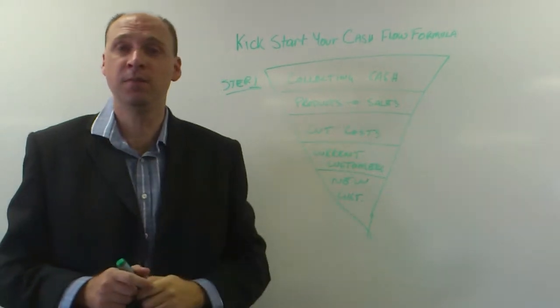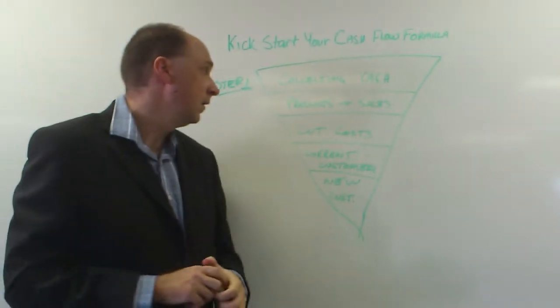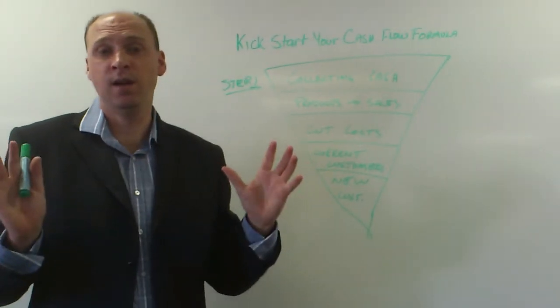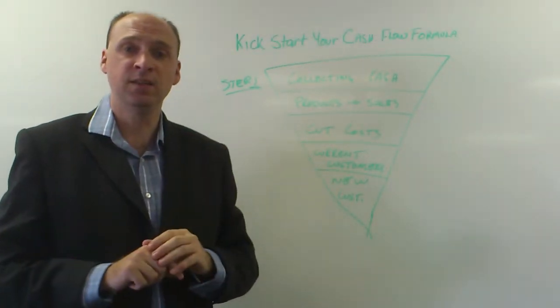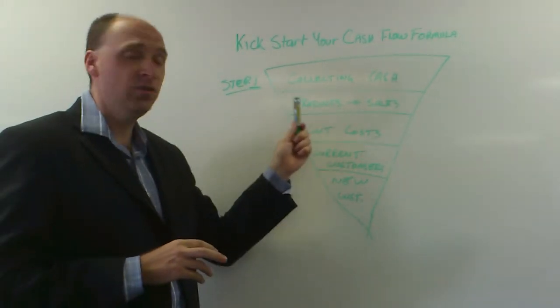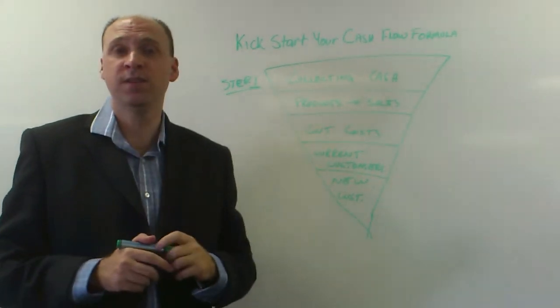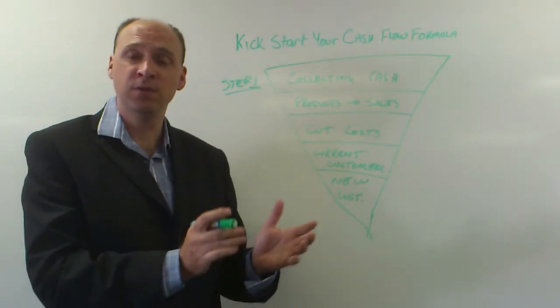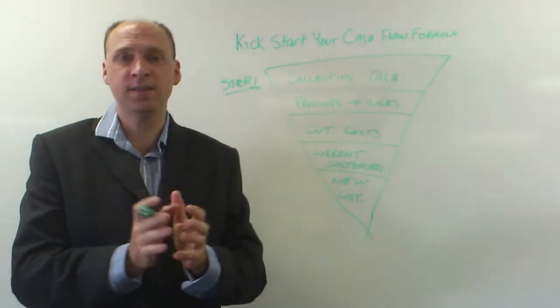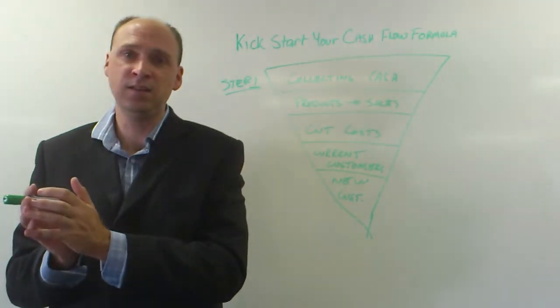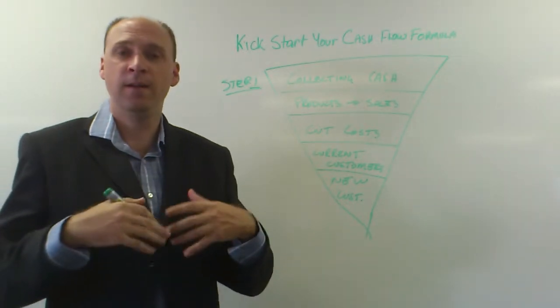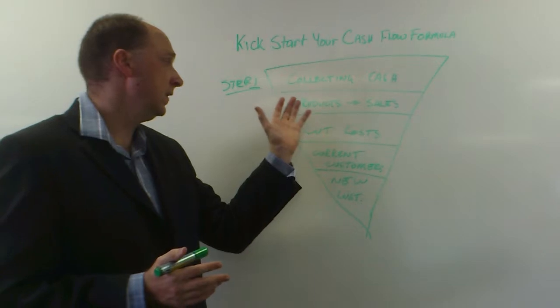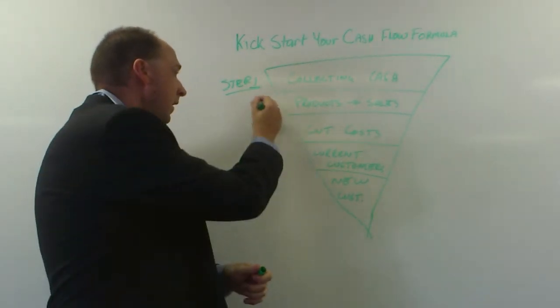The second step is product into sales. As we spoke about when we discussed the difference between profit and cash flow, it's making sure that we're turning over our products well. That means buying the right products for our customers, the way that we price our products, the way that we send our message about our products to our customers, and the method of getting your message out to our customers. Those are the things we'll be discussing in step two.